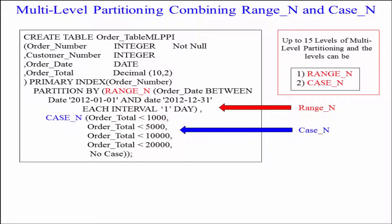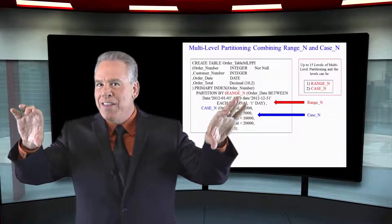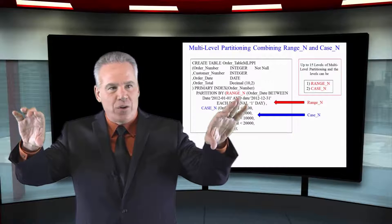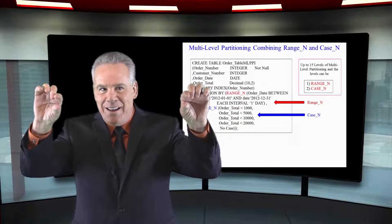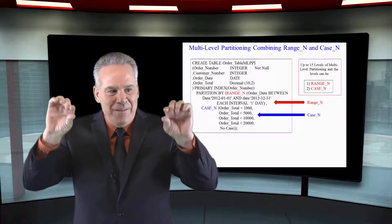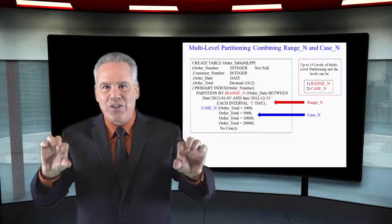Then we're going to come in and we're going to have a case end statement based on the order total. If we have January 1st partition, we're going to have within that partition all of the orders less than 1000, between 1 and 5, between 5 and 10, and so on.